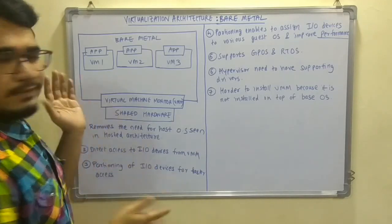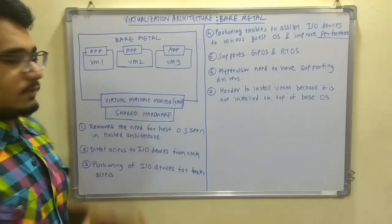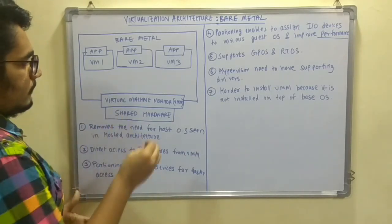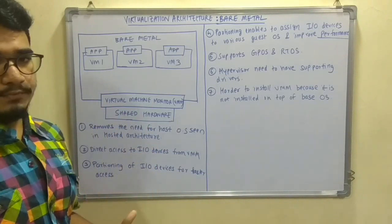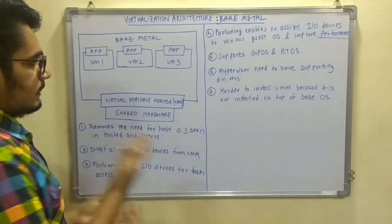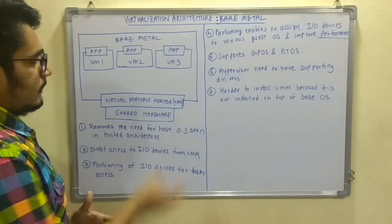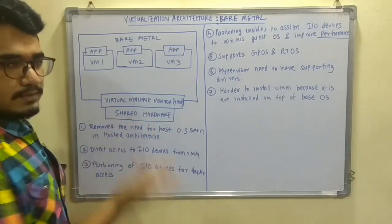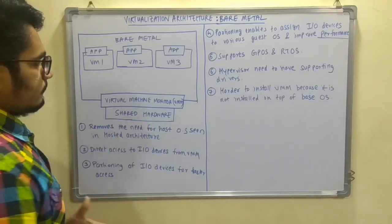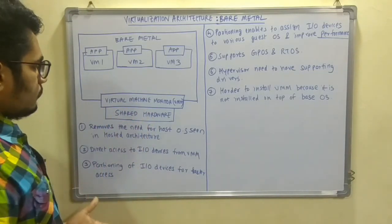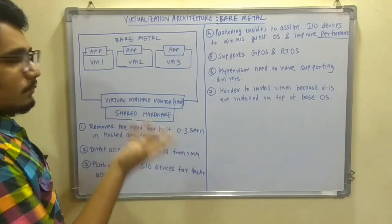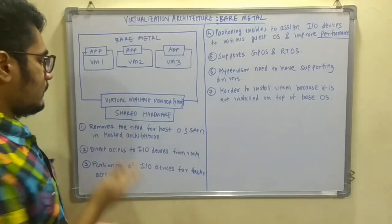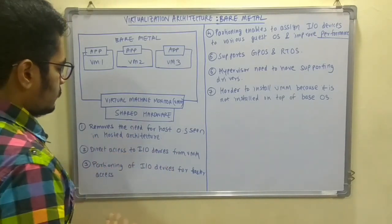From this diagram you can understand the difference between the hosted and bare metal architecture — that one layer, the host OS, is simply removed. This removes the need for the host OS as was seen in the hosted architecture.